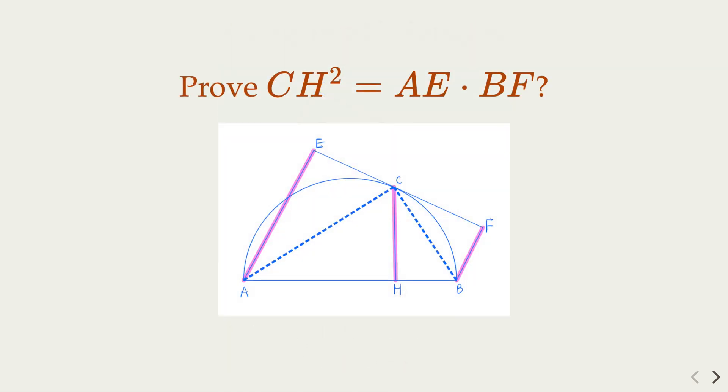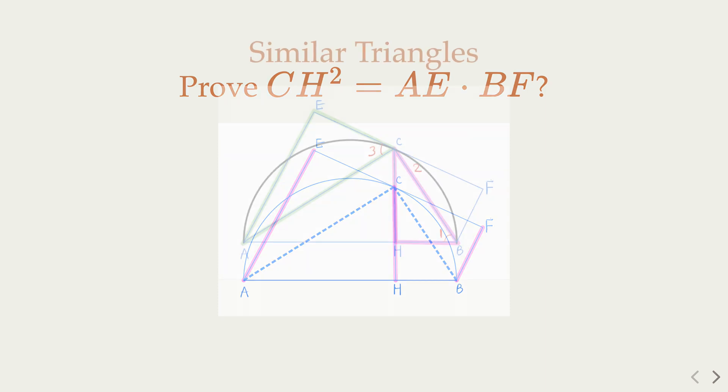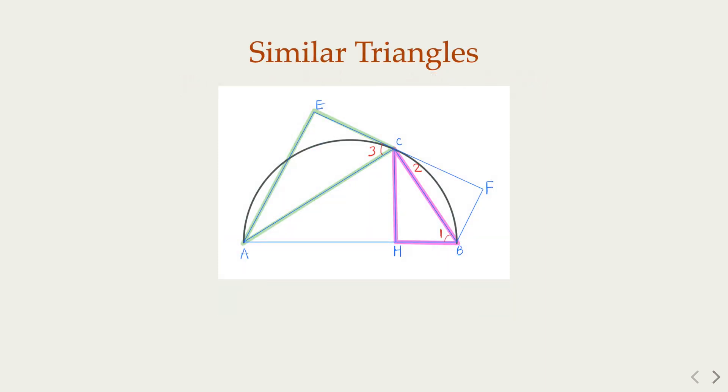Now, the second part, we try to prove that CH square equal to AE times BF. In other words, CH is the geometric mean of AE and BF. If you want, you can pause the video and try to prove it.